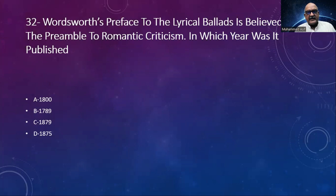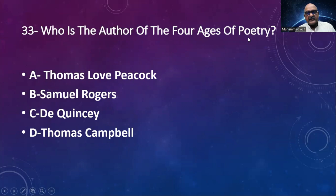Number 32: Wordsworth's Preface to Lyrical Ballads is believed to be the preamble to Romantic criticism. In which year was it published? Options: 1800, 1789, 1879, 1875. The answer is 1800. Number 33: Who is the author of The Four Ages of Poetry? Options: Thomas Love Peacock, Samuel Rogers, De Quincey, Thomas Campbell. The answer is Thomas Love Peacock.